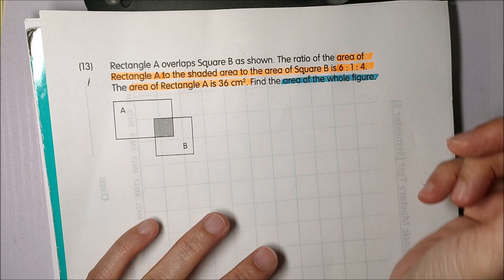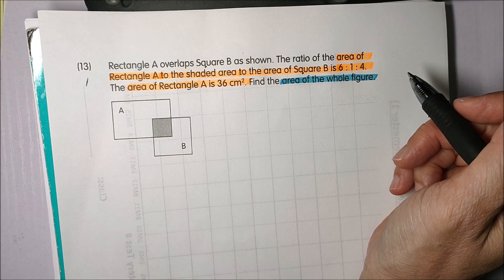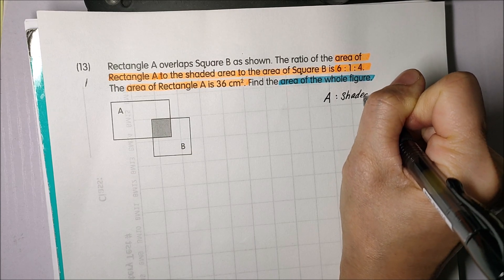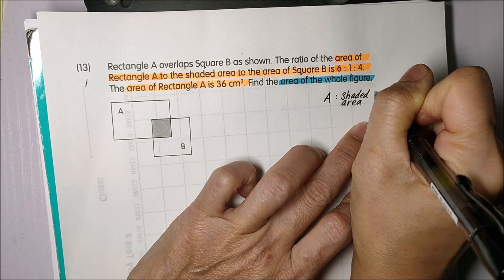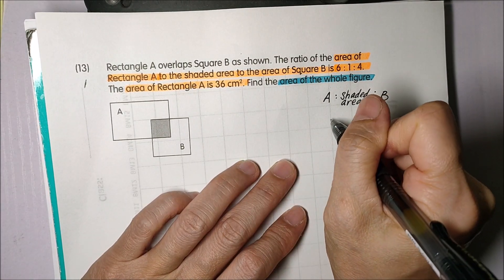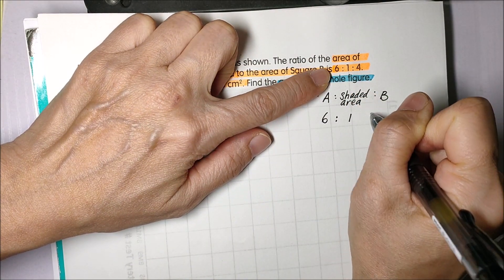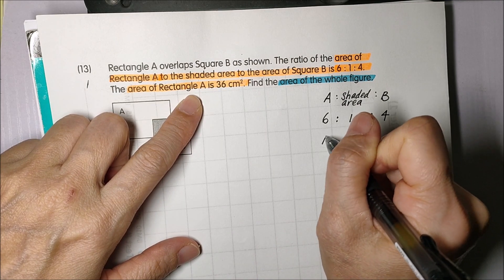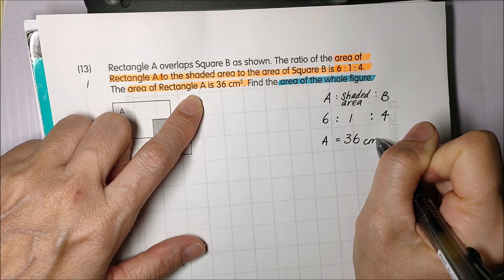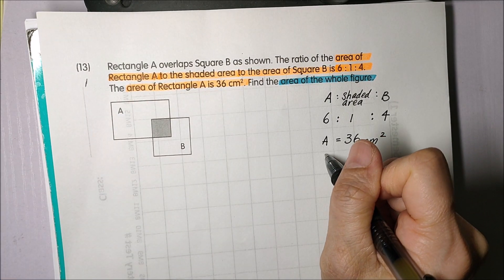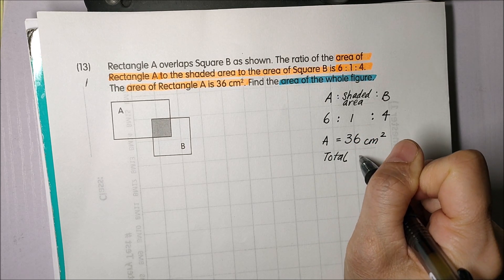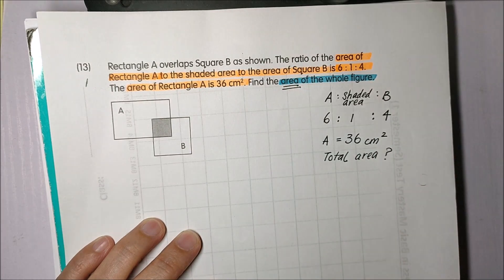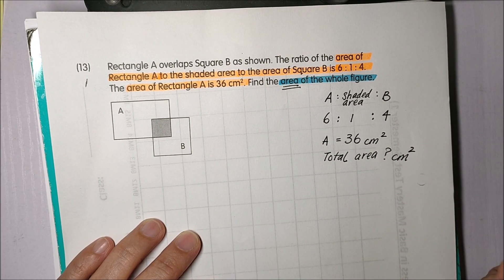I'm just going to write my information to this side. Now I know that the area of rectangle A to the shaded area to the area of square B is 6 to 1 to 4. I also know that the area of rectangle A is 36 square centimeters. So I'm asked to find the area of the whole figure which is the total area. And since I'm looking for area, my answer must always be in square centimeters.